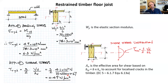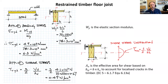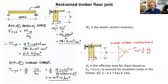We need to find the applied bending stress. The Eurocode gives us the classical equation: stress = moment / section modulus (W_y). Section modulus W_y = bh²/6, where h is the depth. Plugging in our 250 × 75 section: W_y = 781 × 10³ mm³. Applied bending stress = M_y,d / W_y = 6.3 N/mm². That's the stress being applied to our beam.